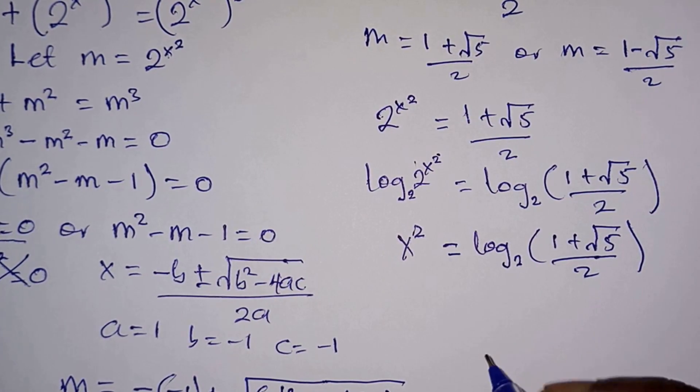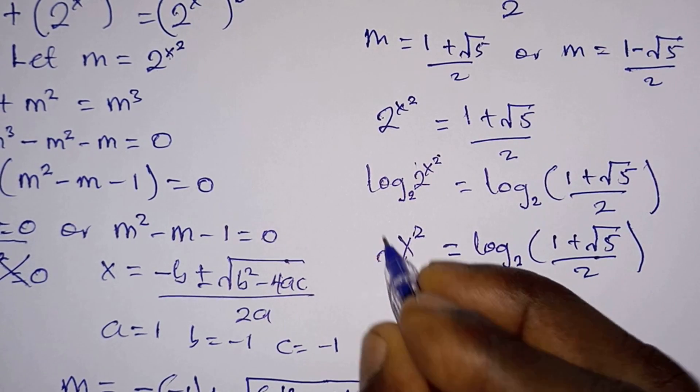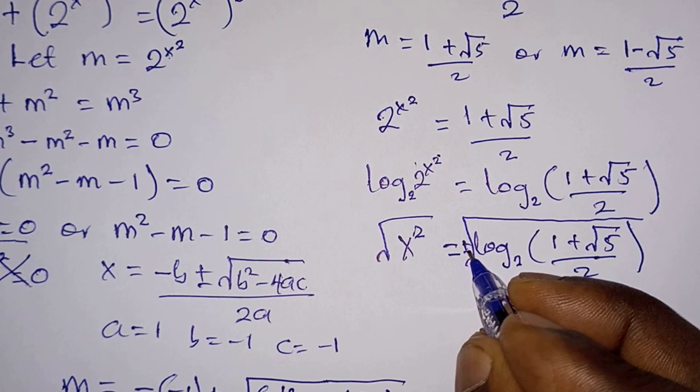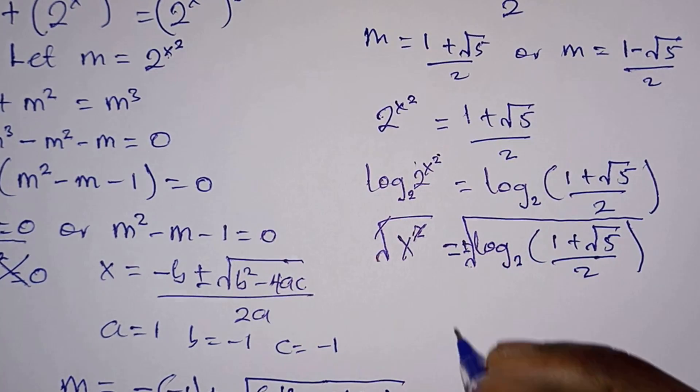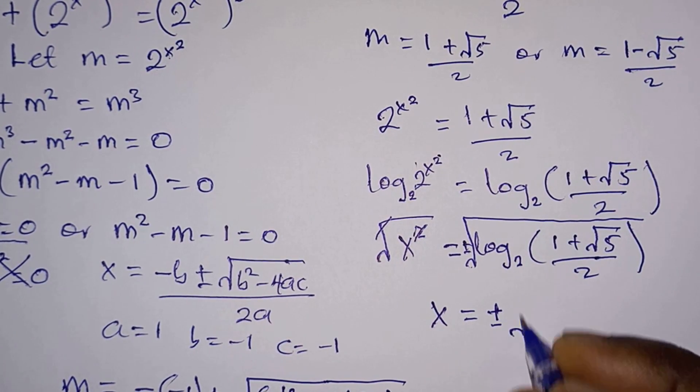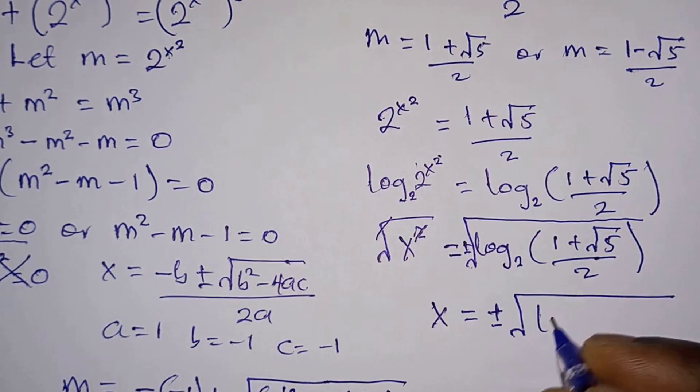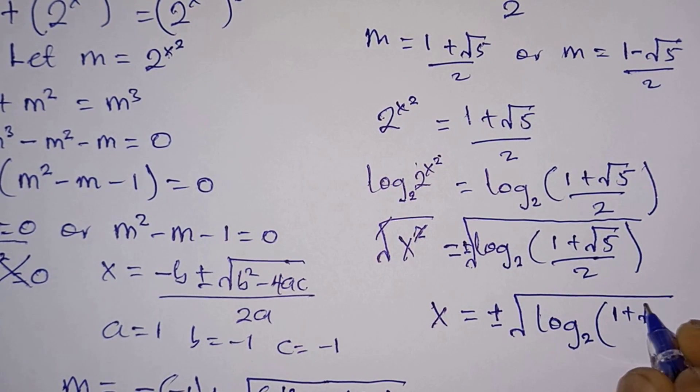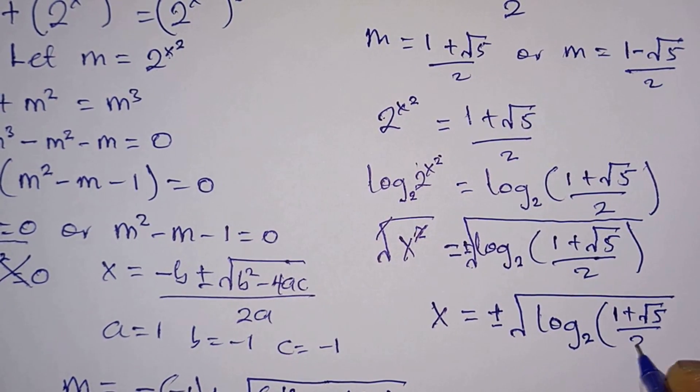We are looking for x and not x², so what we will do is we will take square root on each side of the equation. But remember we have plus or minus here, so this squared and this will go. We have x = ±√(log base 2 of (1 + √5) / 2).